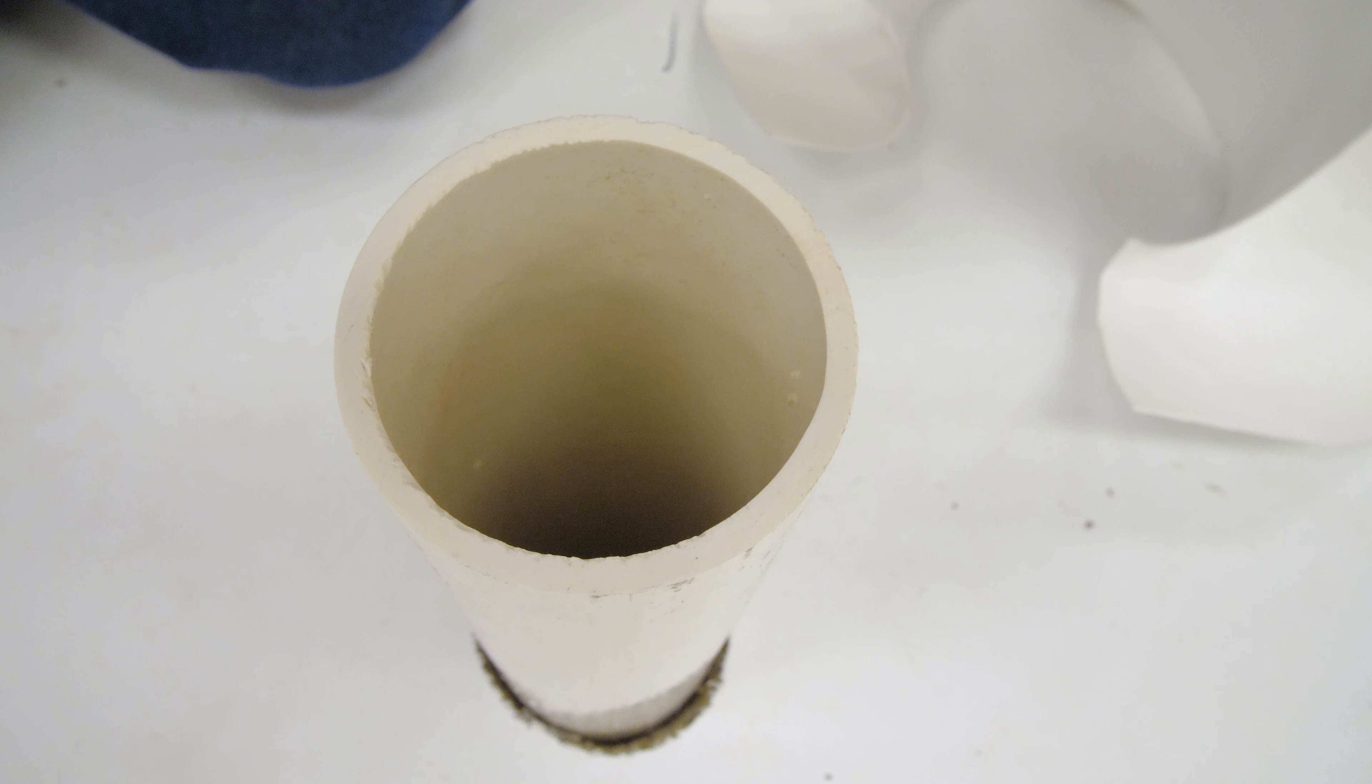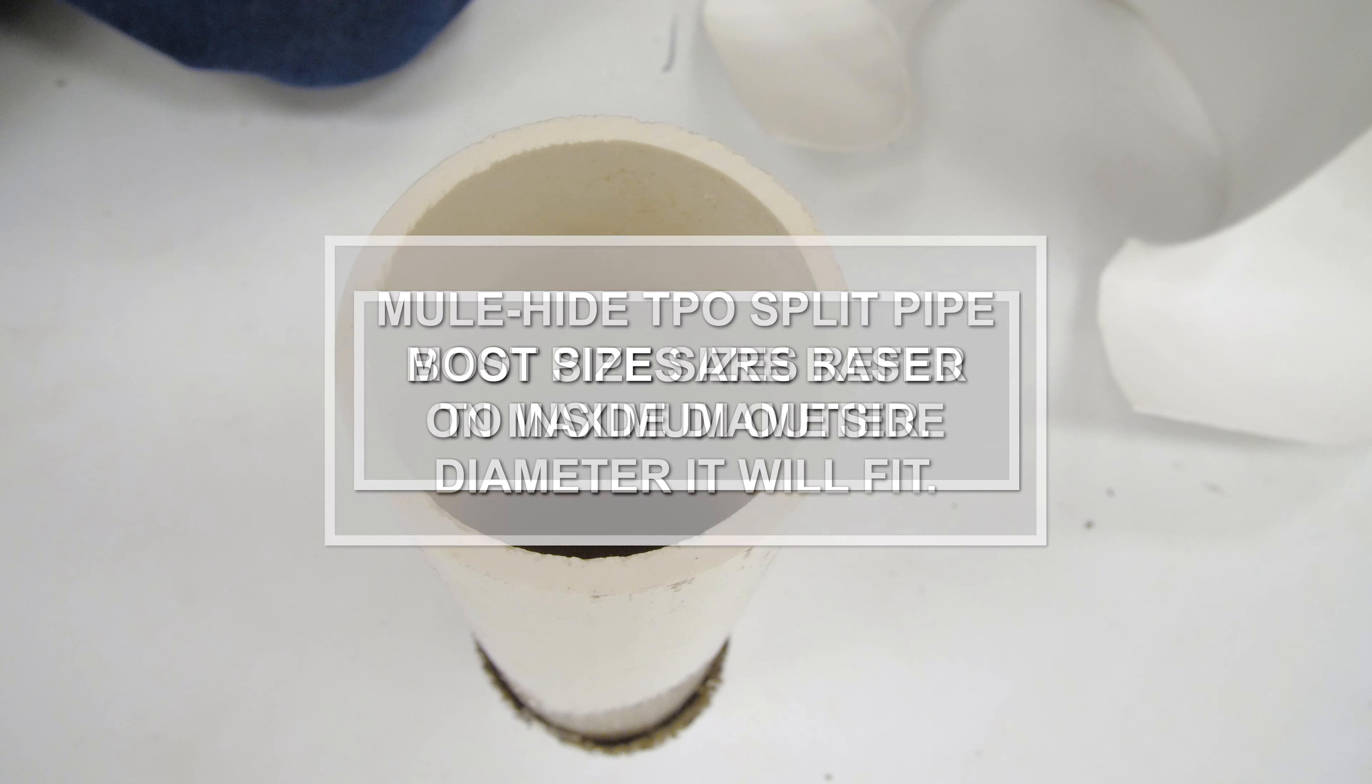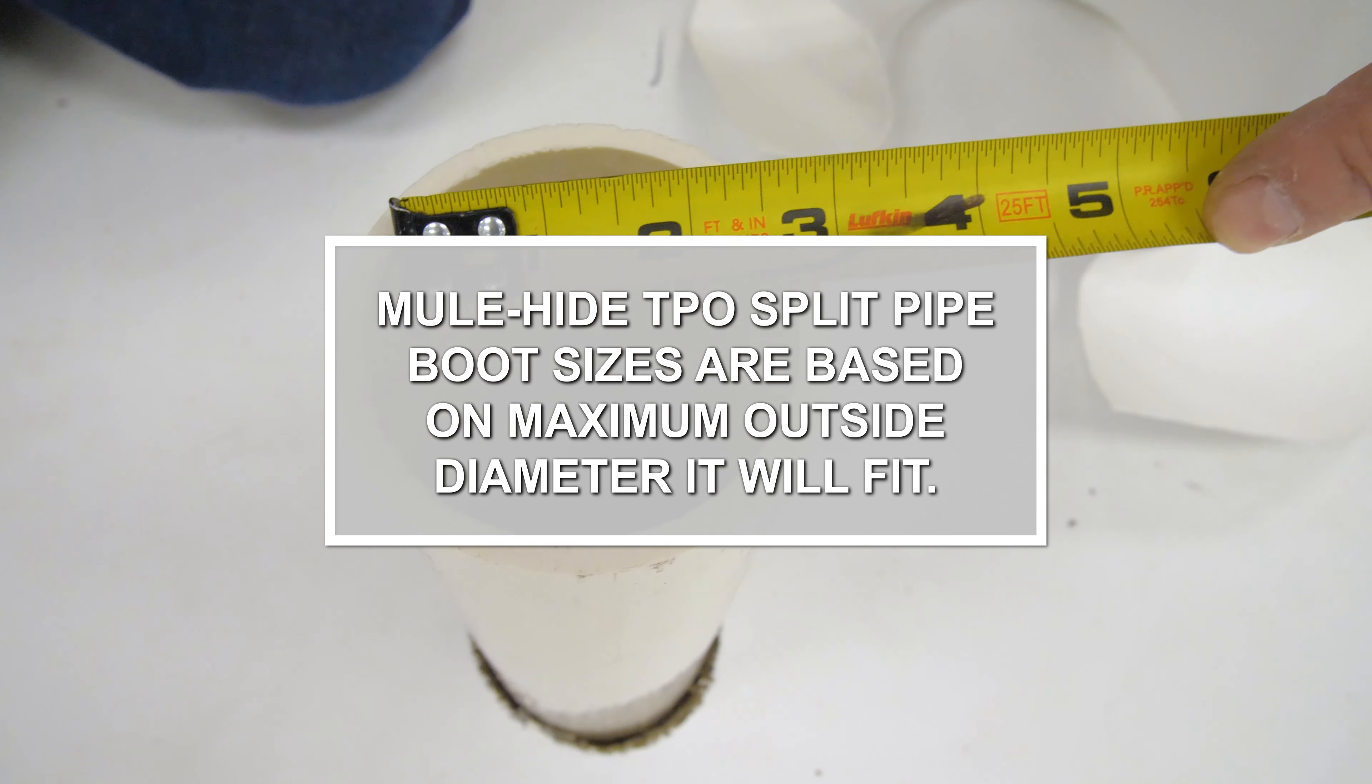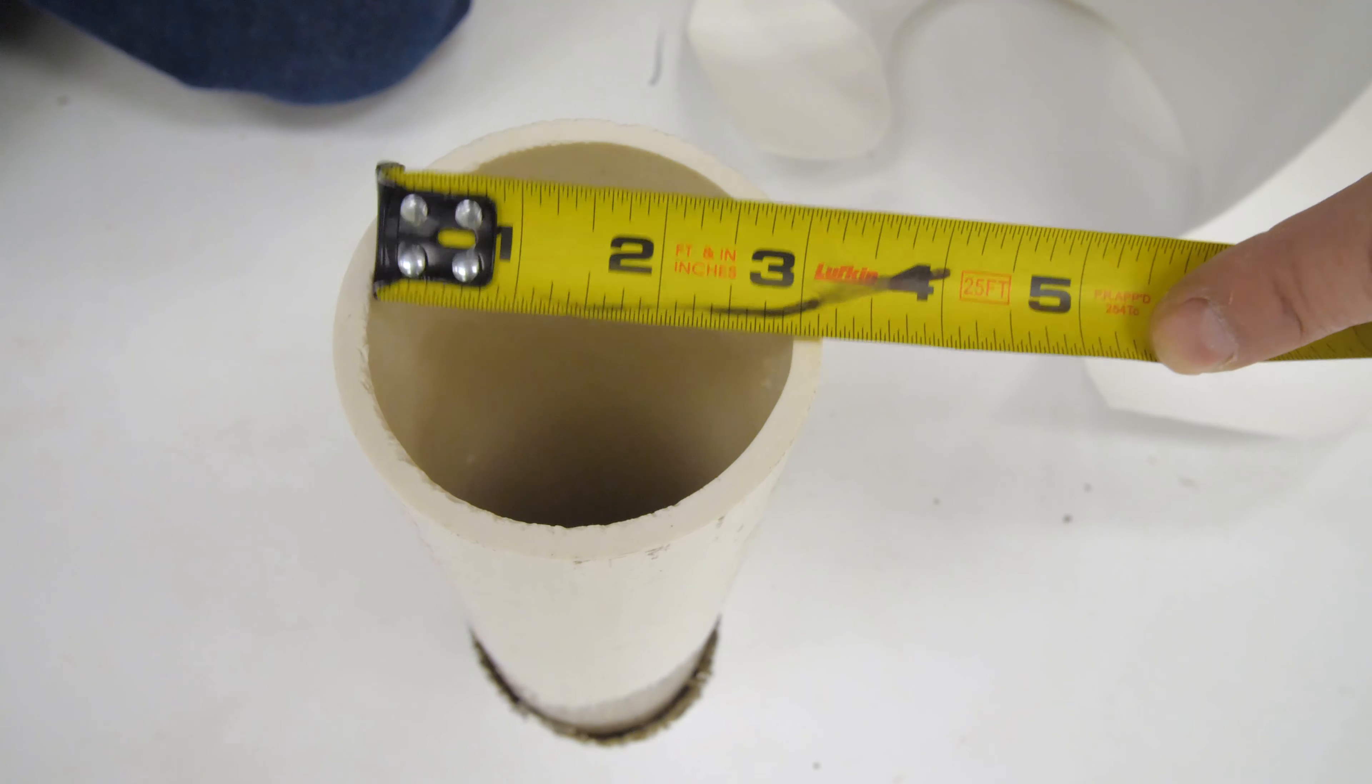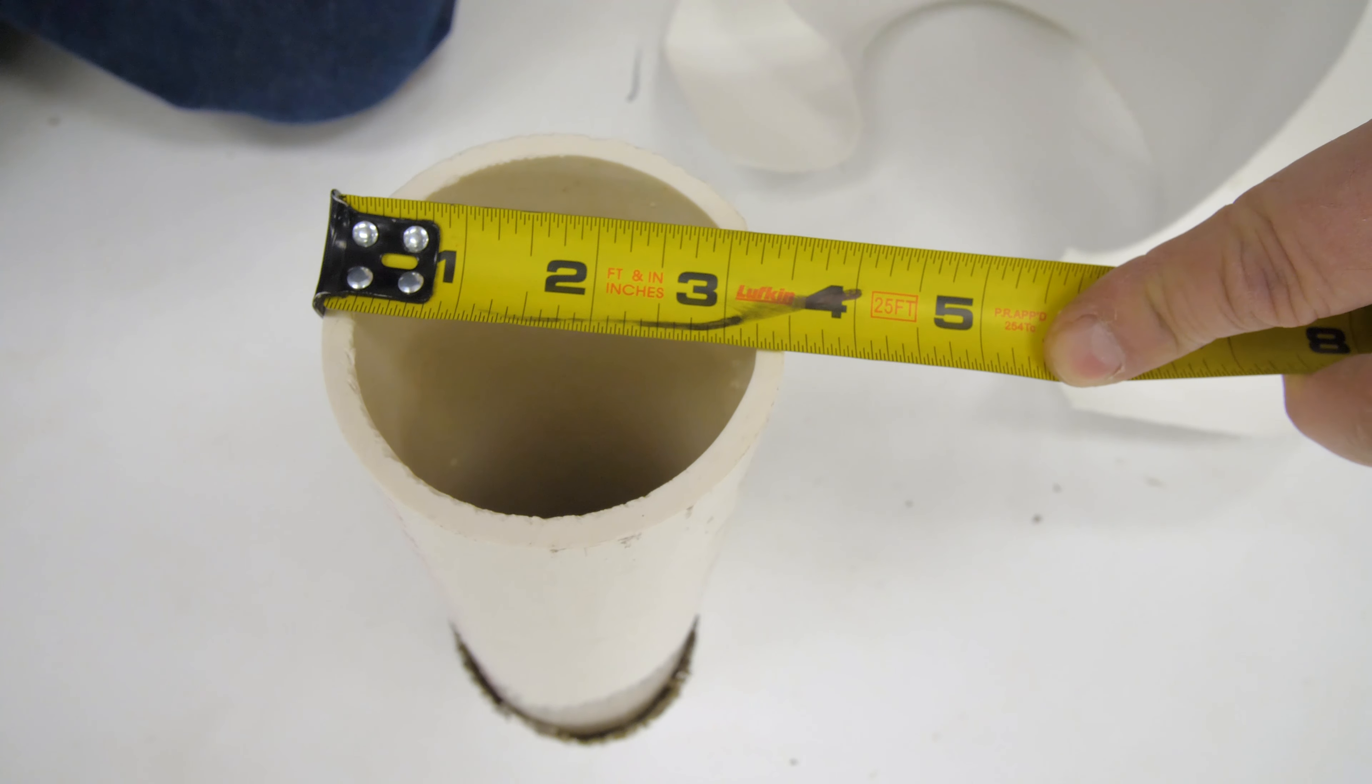Confirm the outside diameter of the pipe to be flashed. Most pipe sizes refer to inside diameter. Mulehide TPO split pipe boot sizes are based on maximum outside diameter it will fit. For example, a 3 inch PVC pipe has an outside diameter of 3 and a half inches.